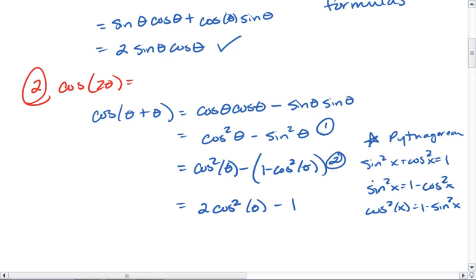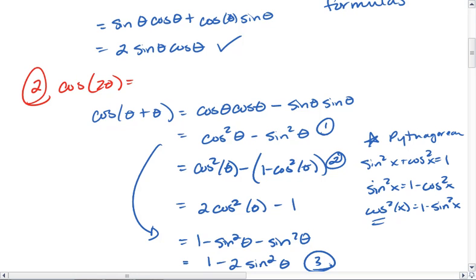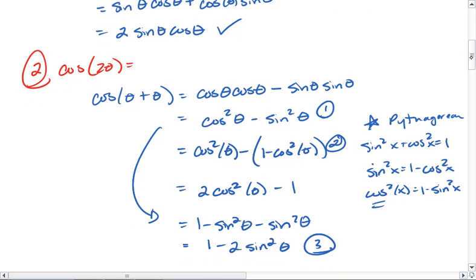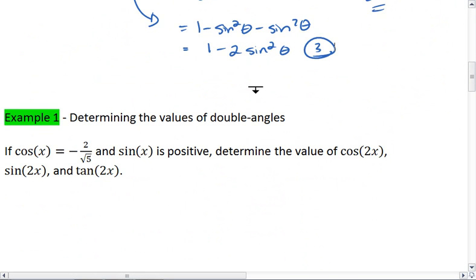Or we can substitute in the cosine squared to get 1 minus sine squared minus sine squared, which gives us 1 minus 2 sine squared theta. And there's your third equation. And lastly, we'll take a look at the tangent double angle formula.